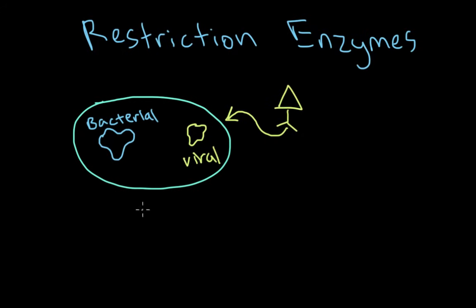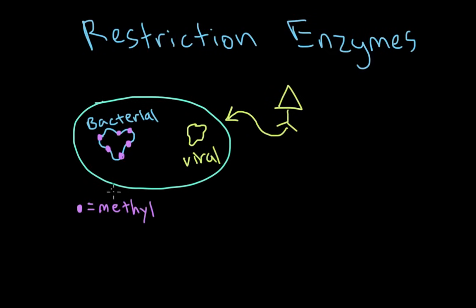The virus infected the bacteria, but the bacteria wants to figure out some way to destroy the viral DNA. One way it can do that is by labeling its own DNA. Let's imagine that the bacteria labels its DNA with these purple dots, which actually represent methyl groups. In order for the bacterial DNA to be methylated, there's an enzyme known as methylase — an enzyme that floats around and, as bacterial DNA is synthesized, goes around and methylates bacterial DNA.